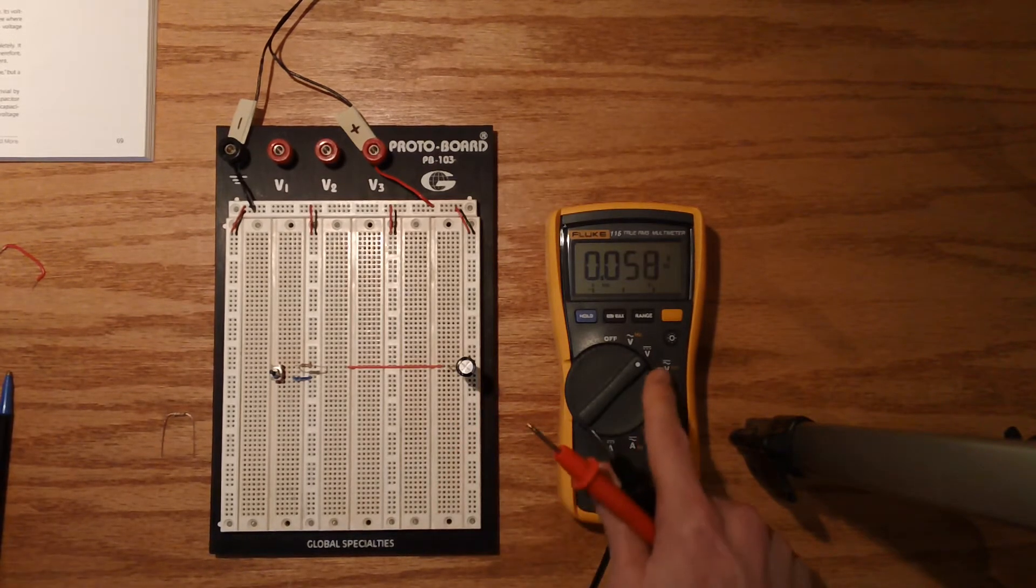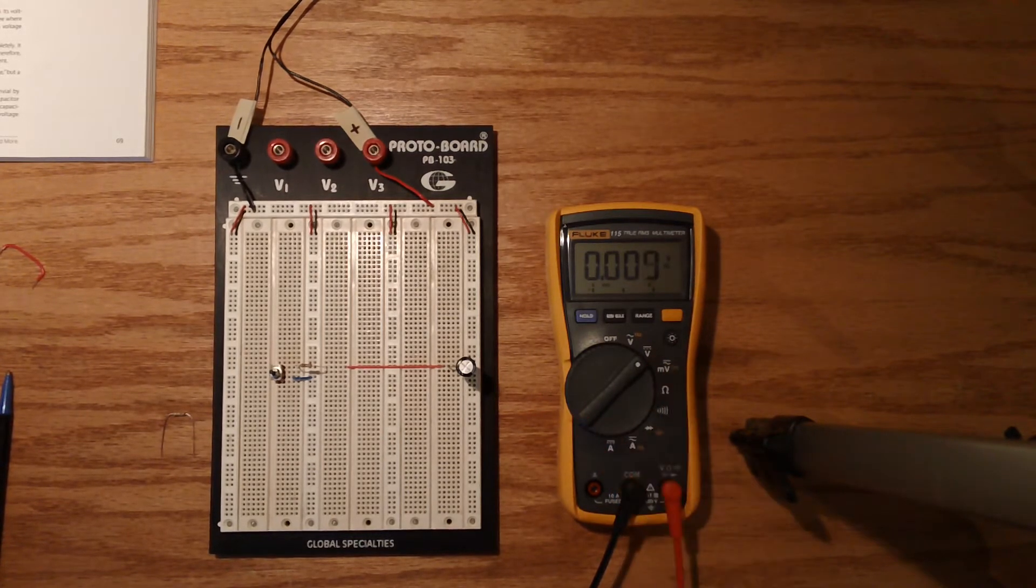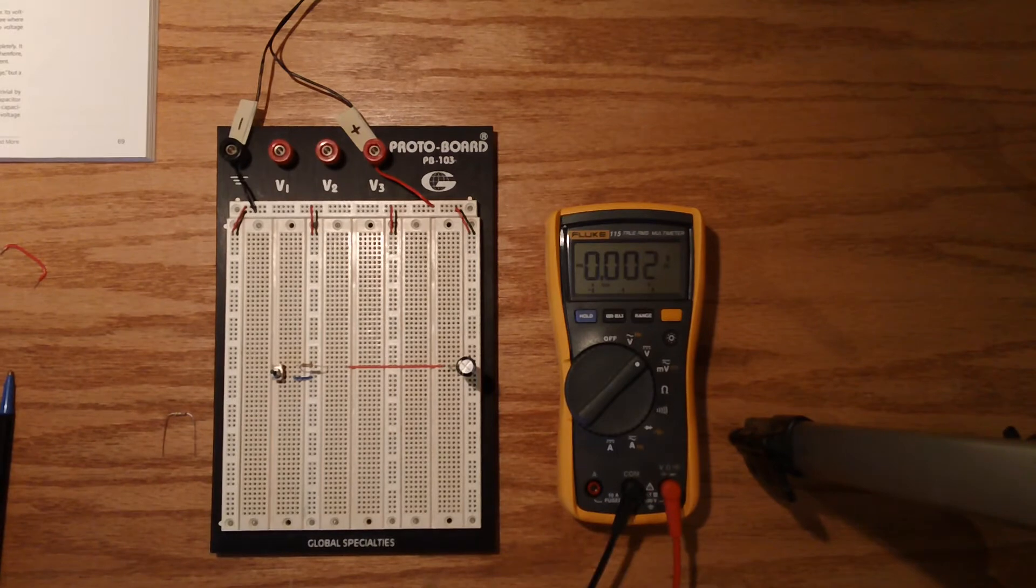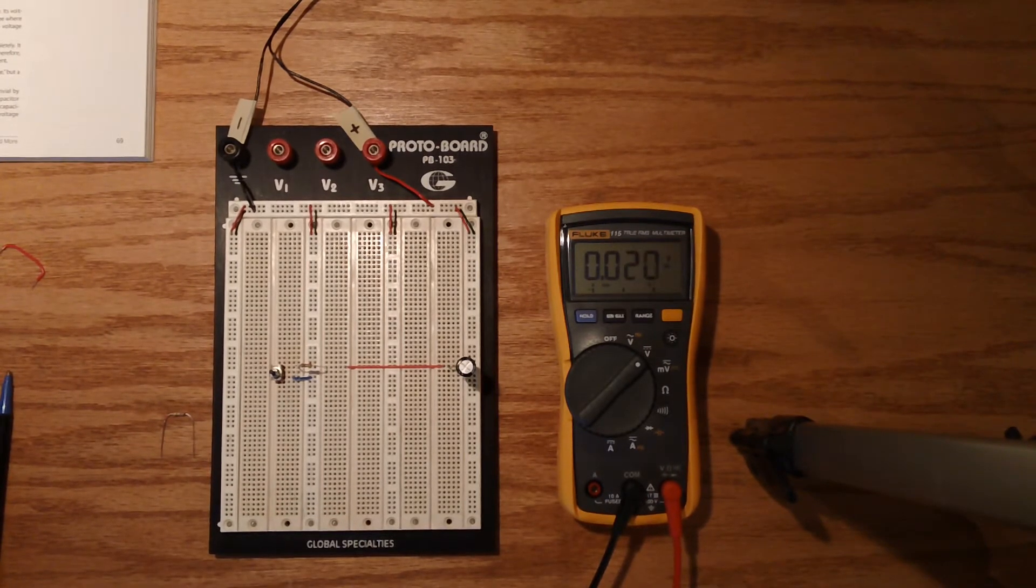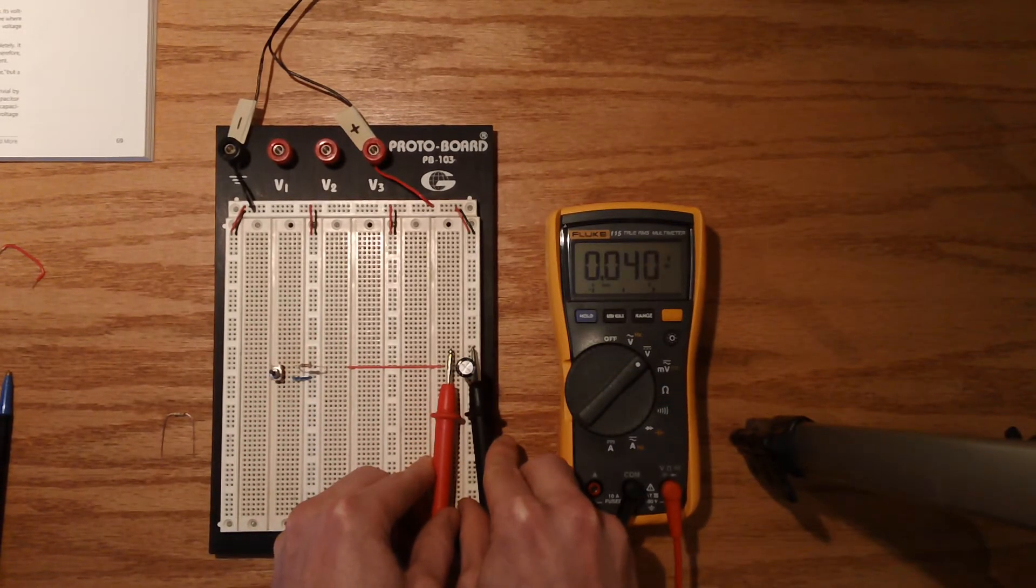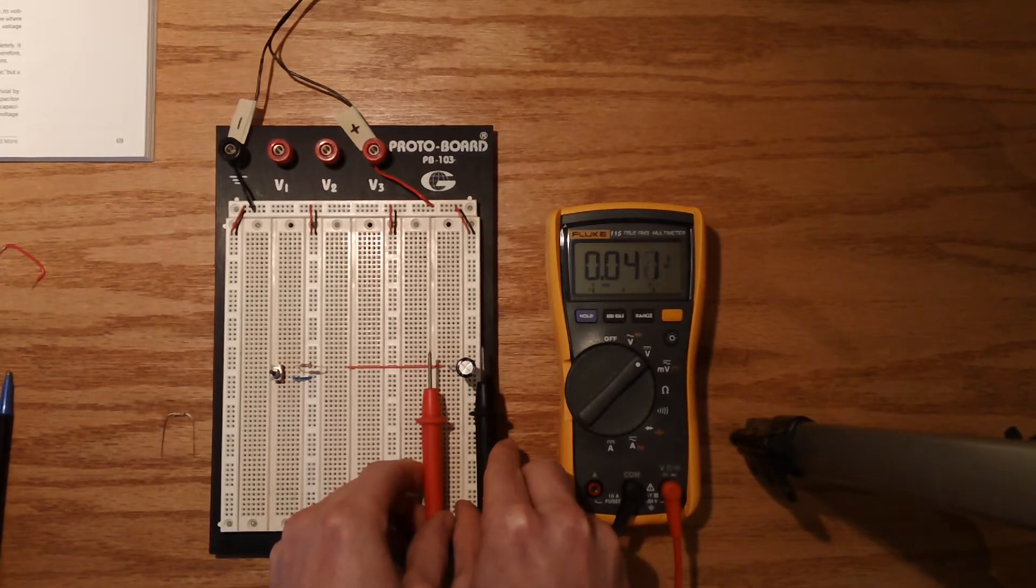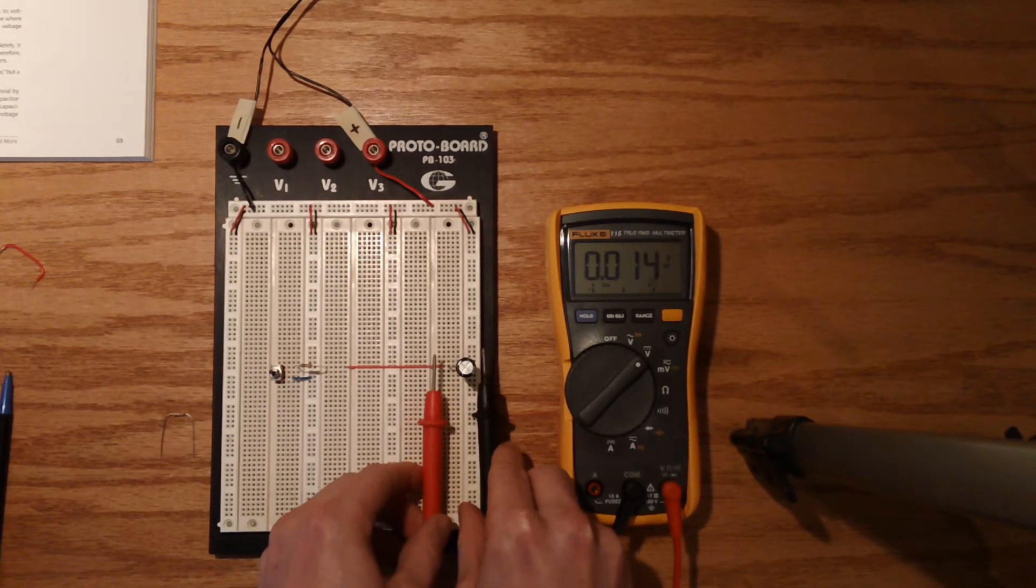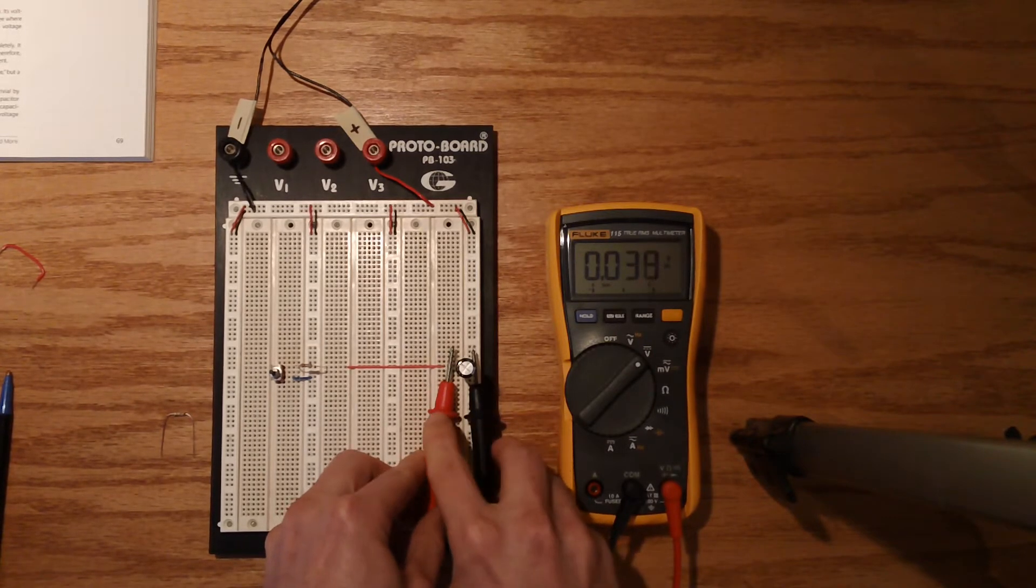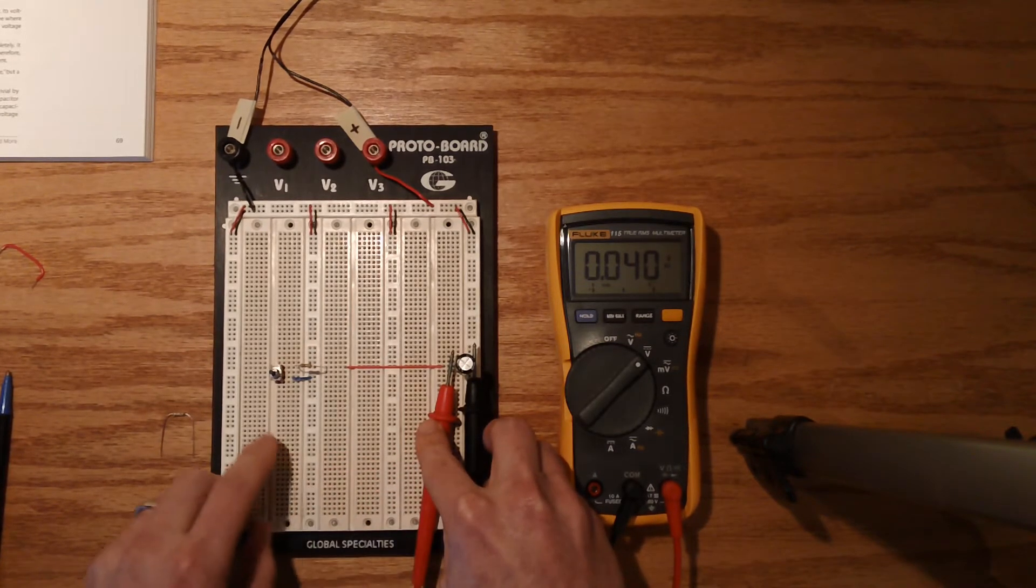So I got my multimeter in direct current voltage mode, and we are going to measure what happens when we put the leads on both sides of the capacitor. Notice this is going to start out really low, see 0.040, so that is almost no voltage whatsoever. So what I will try to do is hold this here.